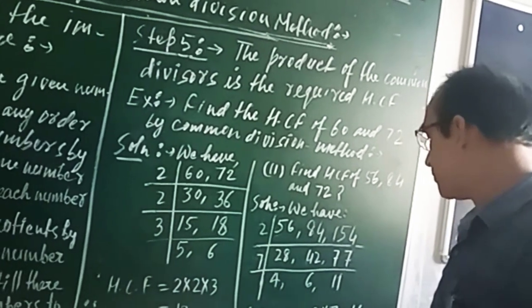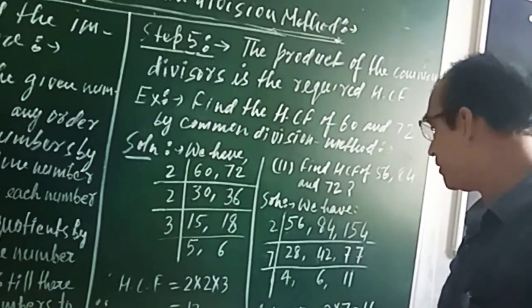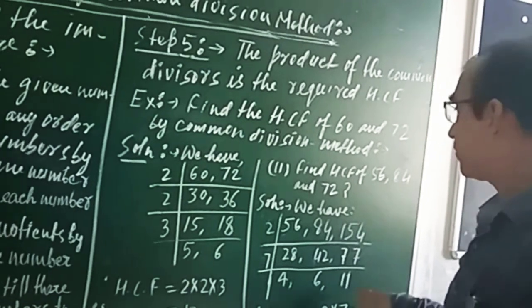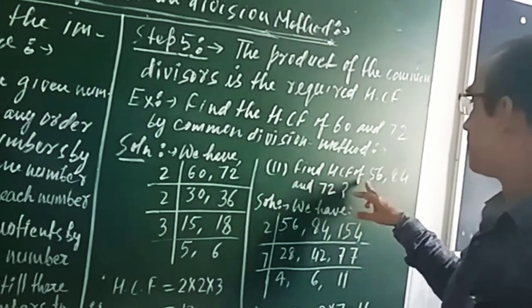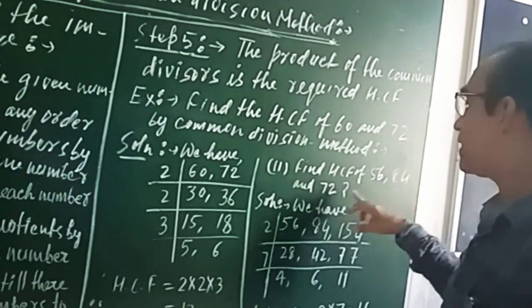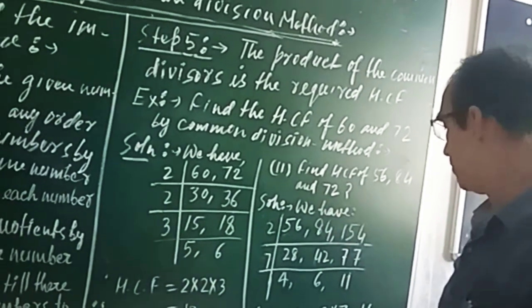So when we multiply 2 times 7, we will get 14. Therefore, the HCF of 56, 84 and 154 is 14.